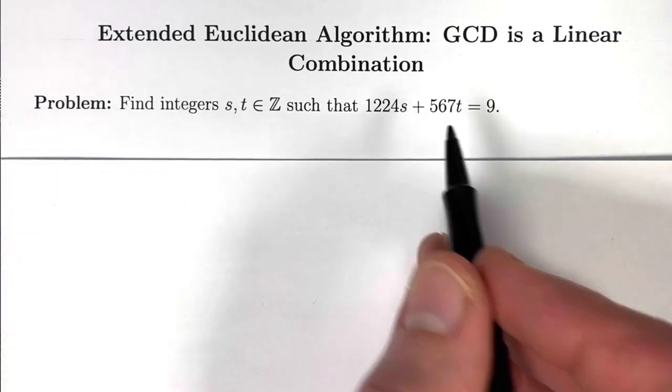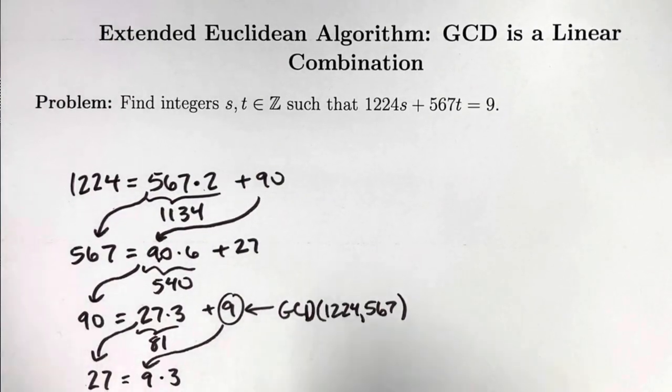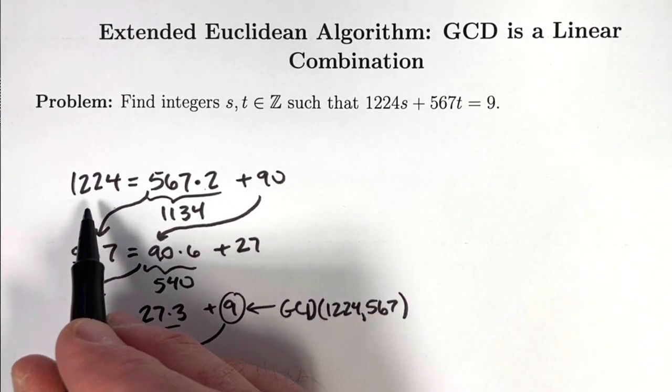That fact was derived in our last video with the Euclidean algorithm. Here are the details. We take the larger whole number, 1224, and divide it by the smaller whole number, 567.